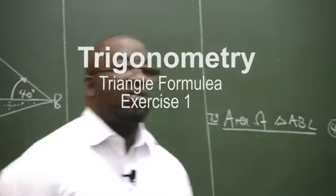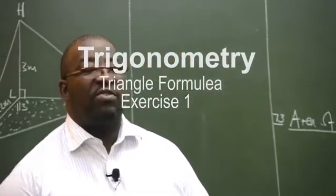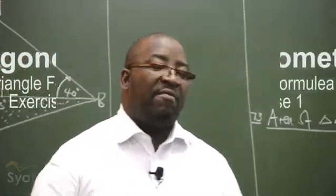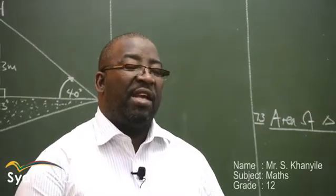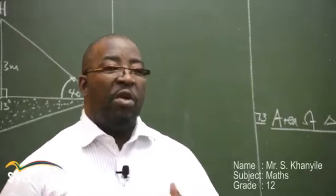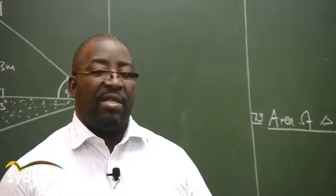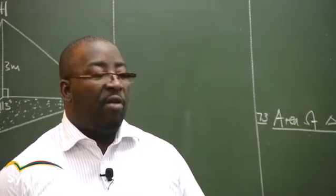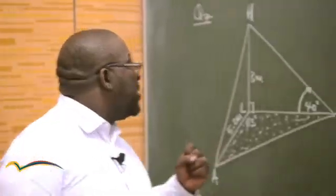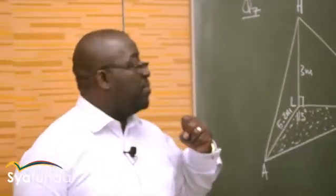Alright, we move to this part of trigonometry which we refer to as the triangle formulae. Remember that the first part of trigonometry was happening in a right-angled triangle where we used SOH-CAH-TOA — sine, cos, and tan of a particular angle. Now we look at this diagram.